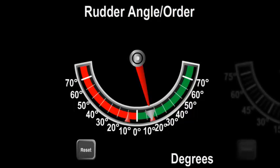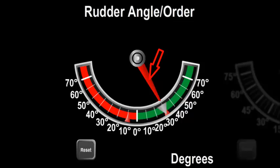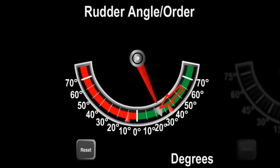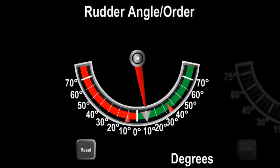The rudder angle order component displays two different values at the same time. The red needle shows the angle at which the rudder is pointing — the rudder angle — and the small gray triangle shows the direction in which the autopilot has requested the rudder to point, the rudder order. If this value is not supplied on the bus, the gray triangle will be dimmed.